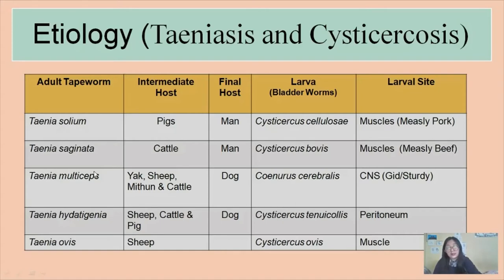There are other species of Tenia, namely Tenia multiceps, Tenia hydatigera, and Tenia ovis. These have different intermediate hosts and final hosts, along with different larval stages and larval sites.